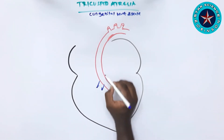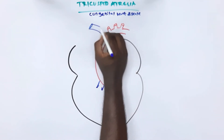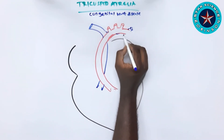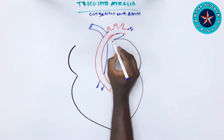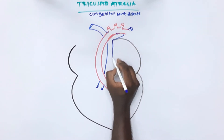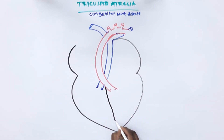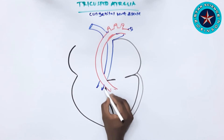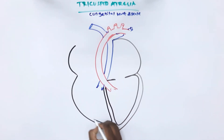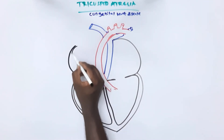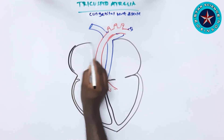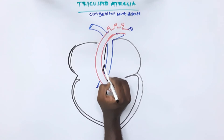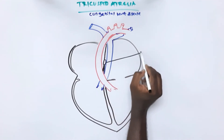When we have this kind of condition, almost there will be three ways where the blood will reach the lungs. The lungs may receive blood through three routes: a ventricular septal defect (VSD), patent ductus arteriosus (PDA), or an atrial septal defect (ASD). When there is an ASD, there should also be a VSD.